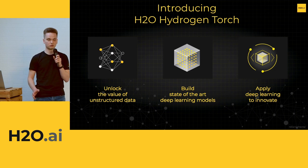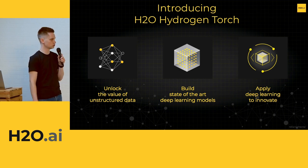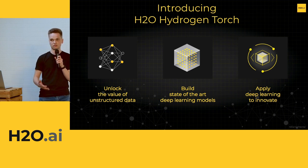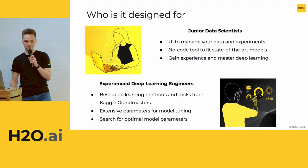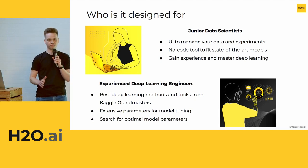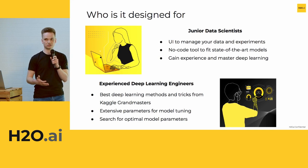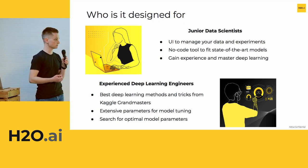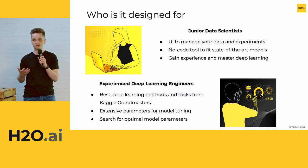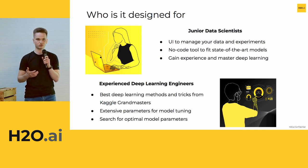H2O Hydrogen Torch is a no-code deep learning platform that allows you to train deep learning models without a line of code. All you have to do is go to the UI, adjust some settings, and train and deploy deep learning models. Our target audience is broad — from junior data scientists, who can start training deep learning models right away by clicking through the UI, to super experienced deep learning engineers who want all settings available explicitly for them to tune.